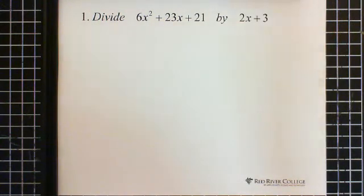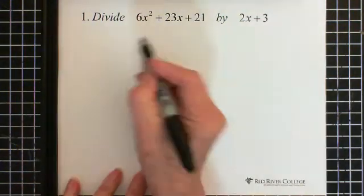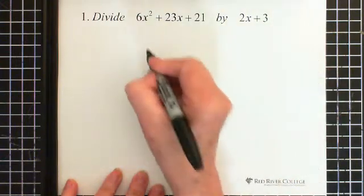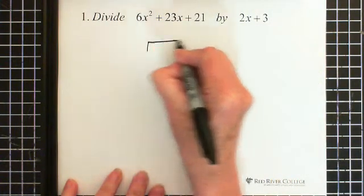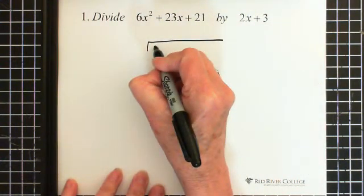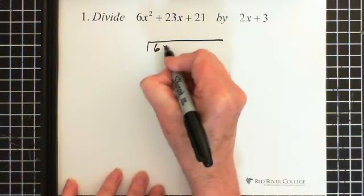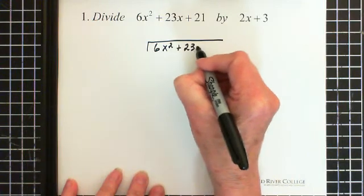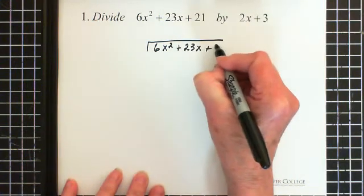Okay, so here we have 6x squared plus 23x plus 21 divided by 2x plus 3. So this is our dividend, this is our divisor. So here we go, the dividend goes under the little house. So 6x squared plus 23x plus 21.